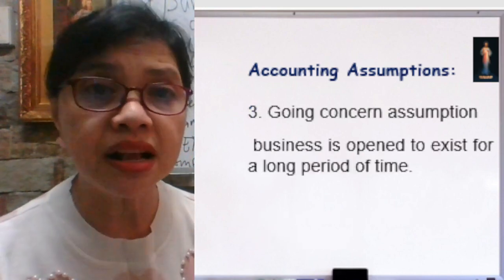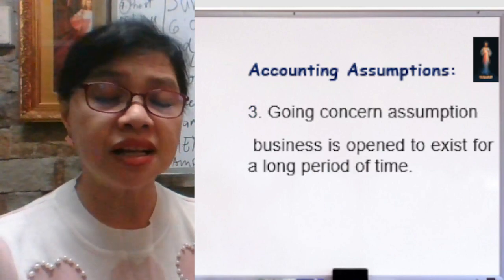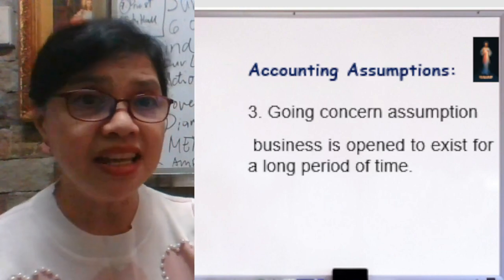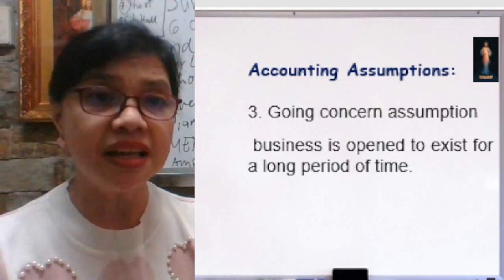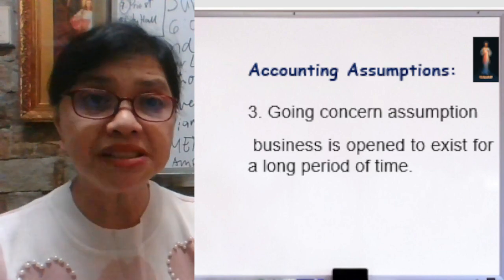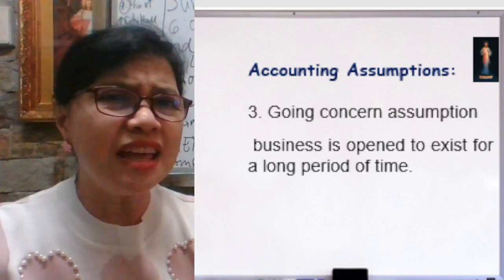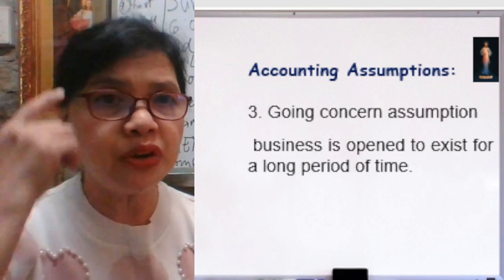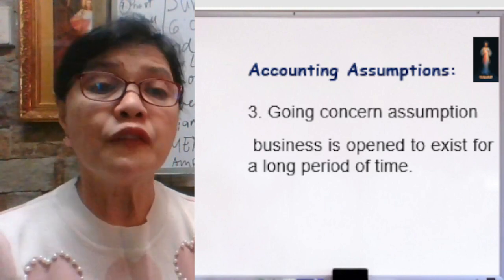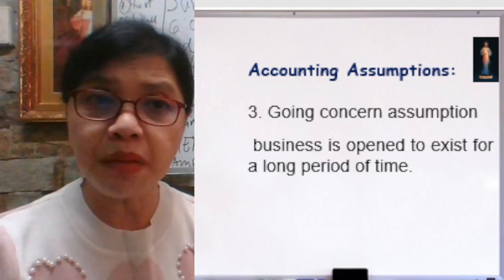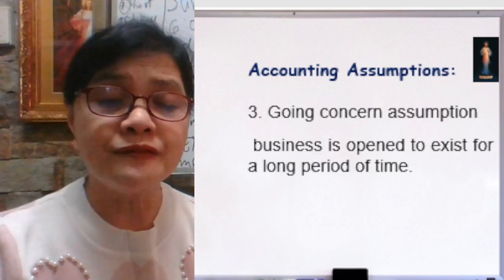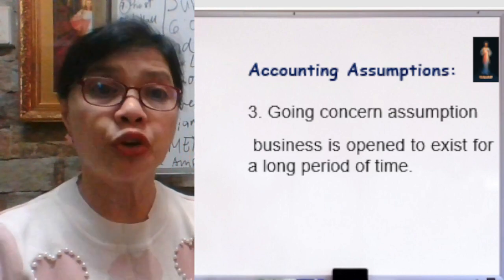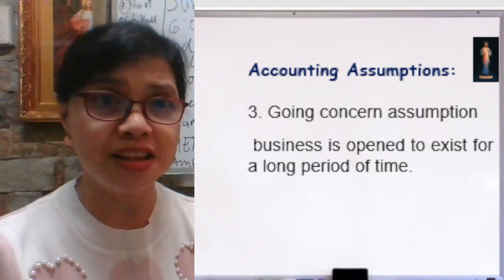Number three: the Going Concern Assumption. This means that when I opened ABC Company, I assume that the business will exist for 5, 10, 15, 20, or maybe 50 years or beyond. When I open a business, I put in mind that it will exist for a very long period of time. And as such, I should record all purchases at cost, not at fair market value.